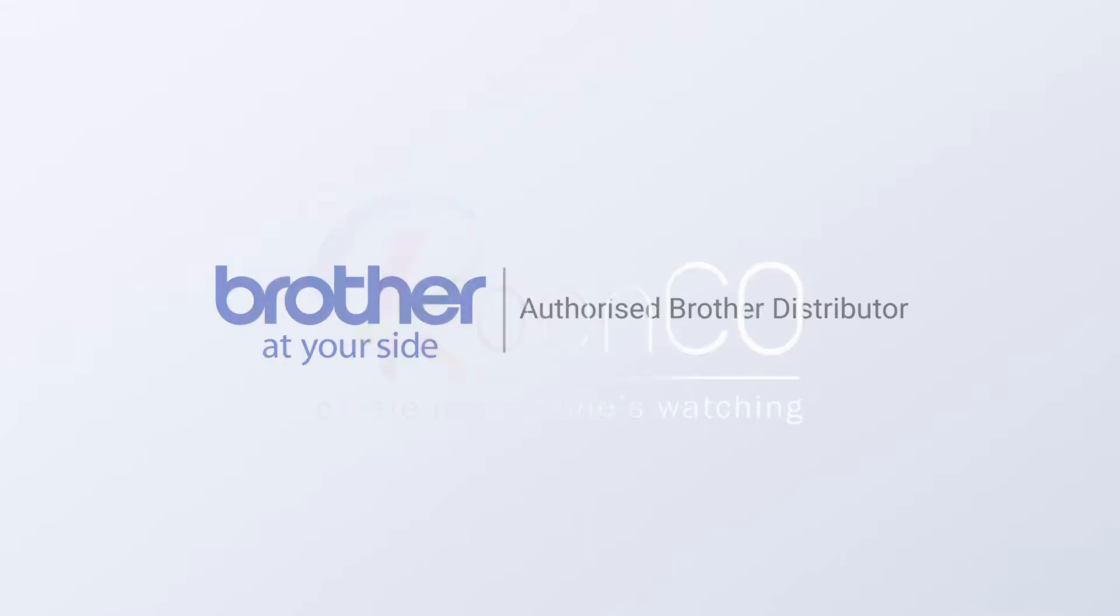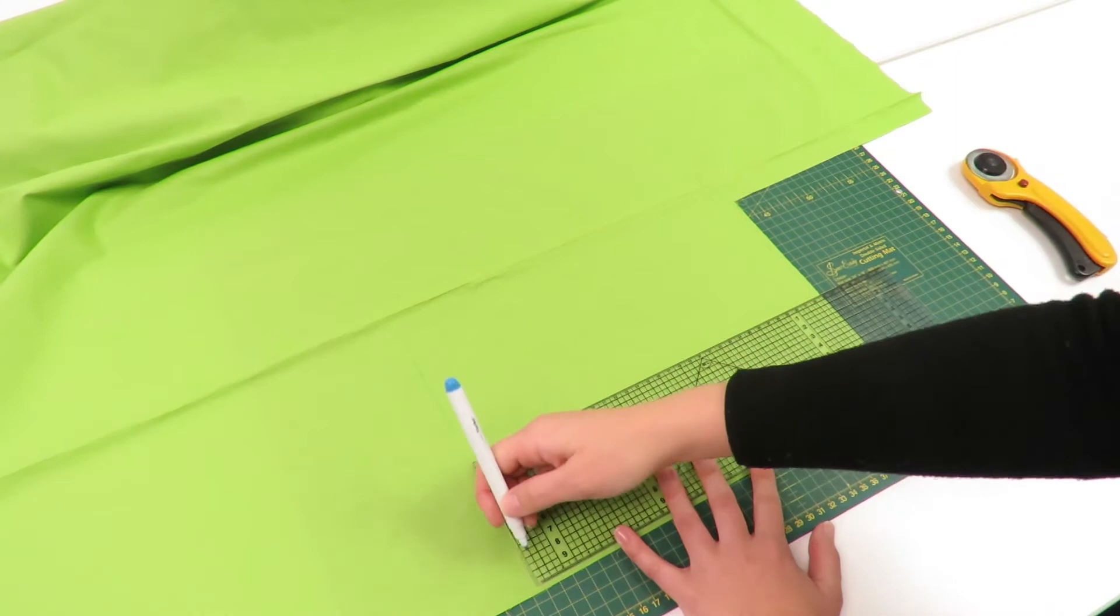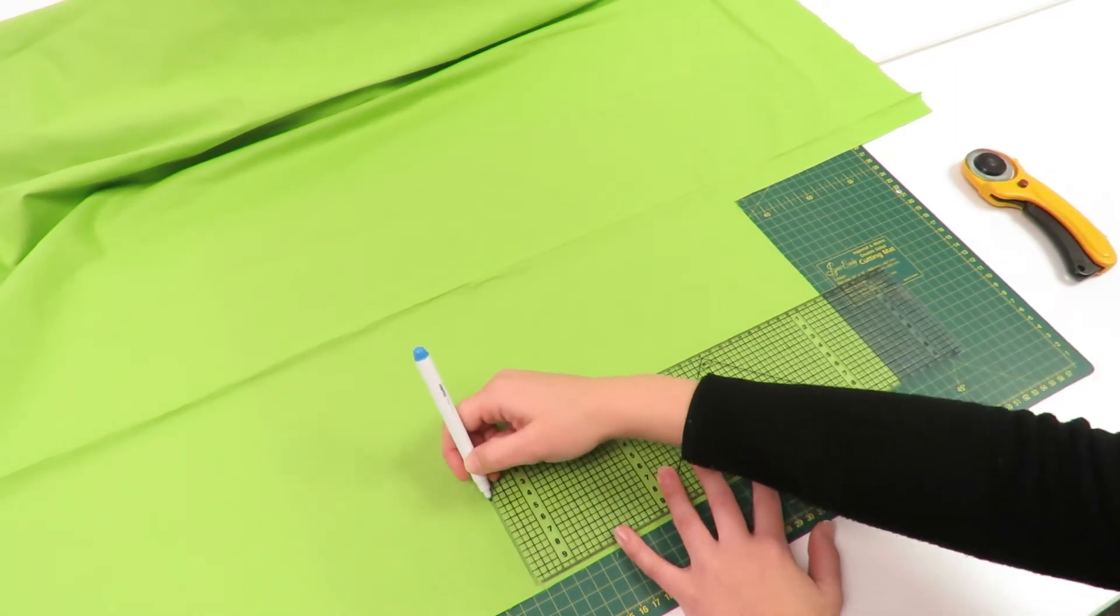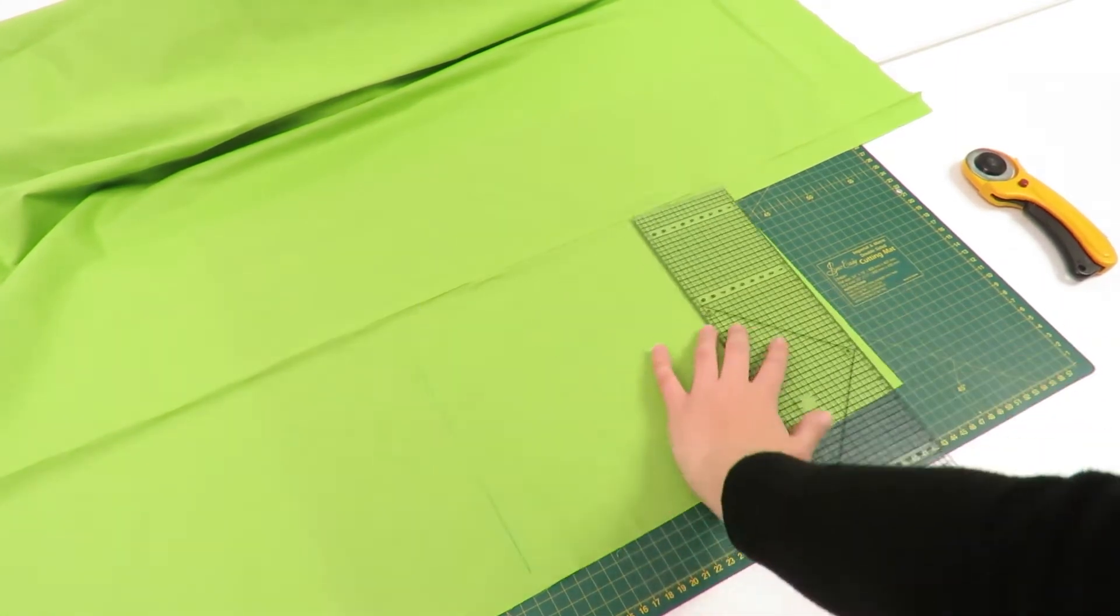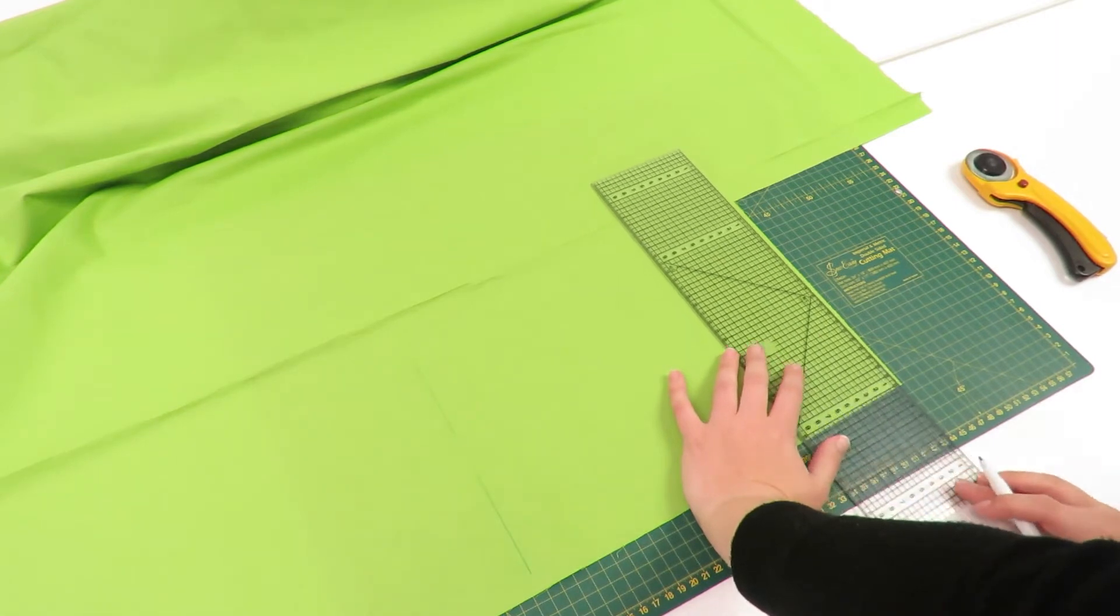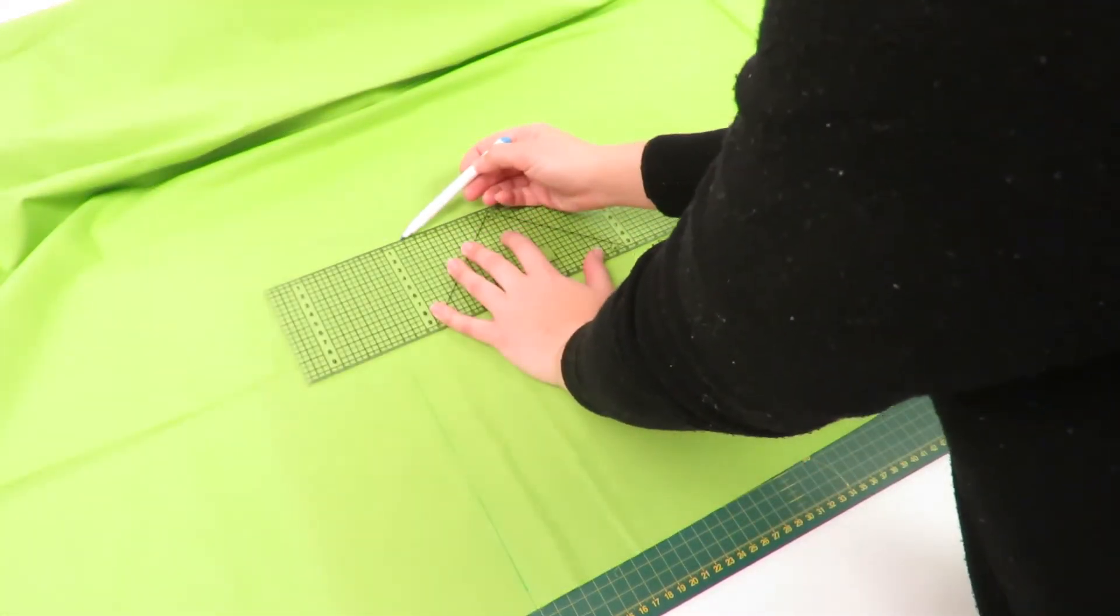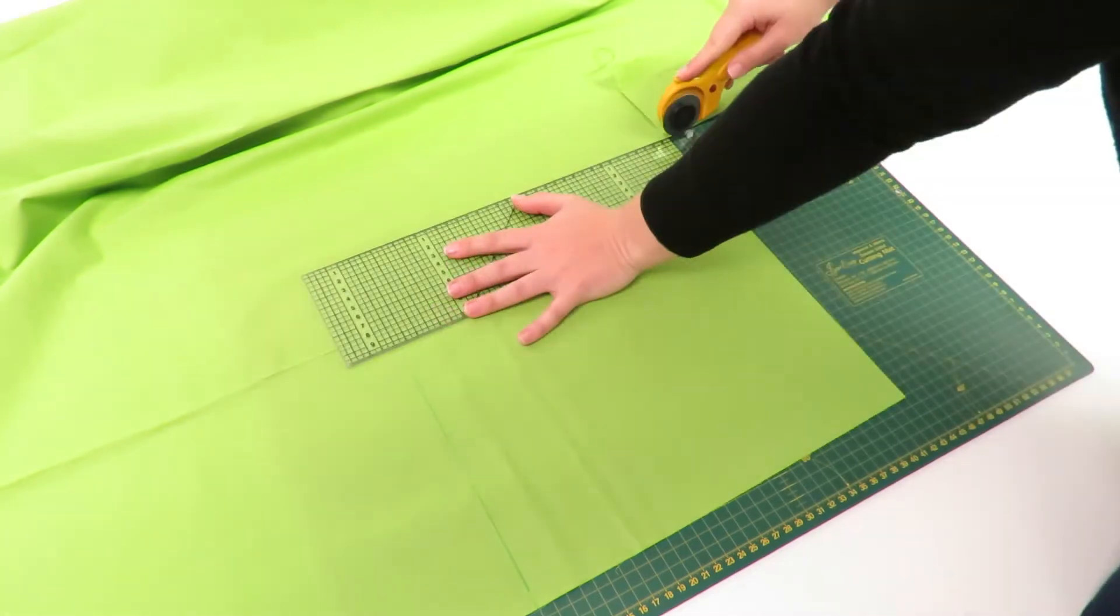For today's project, we would like to show you how to create freestanding lace serviettes. We are going to start by measuring our serviette size on our desired fabric and adding three centimeters for the mitered corner. Use either your rotary cutter or your fabric scissors to cut out the pattern.